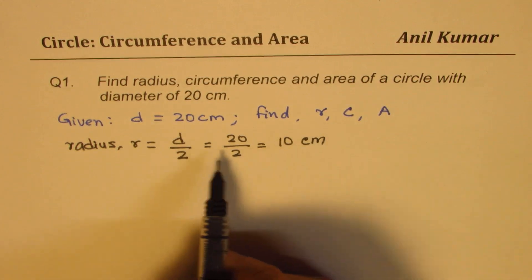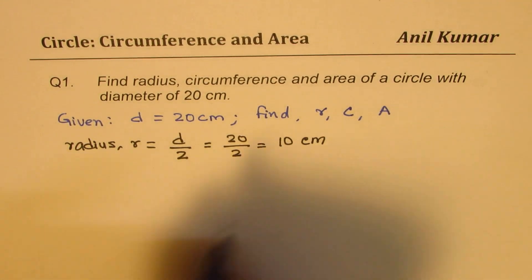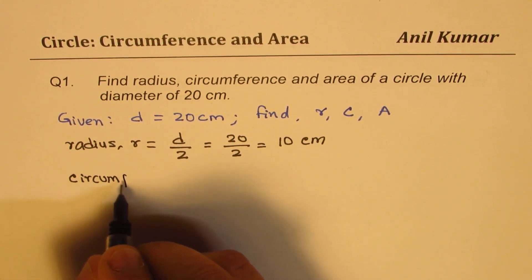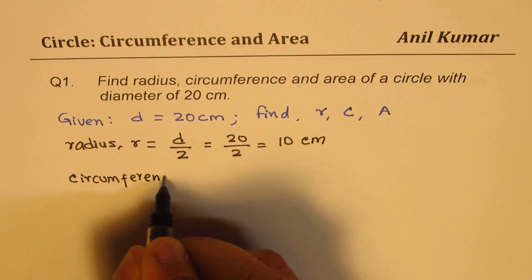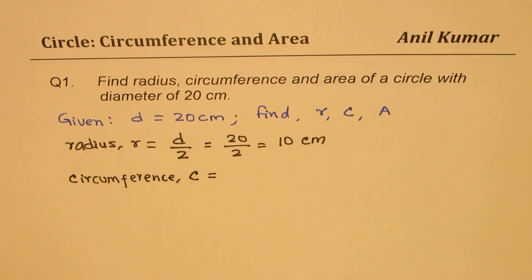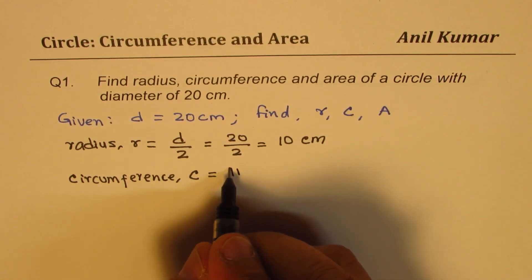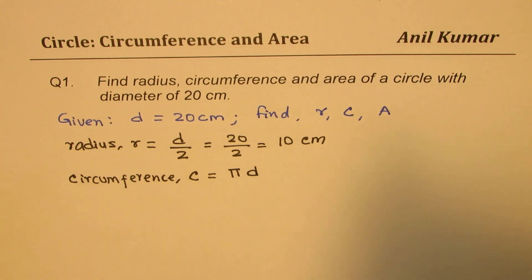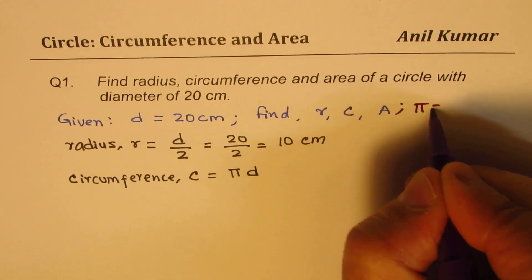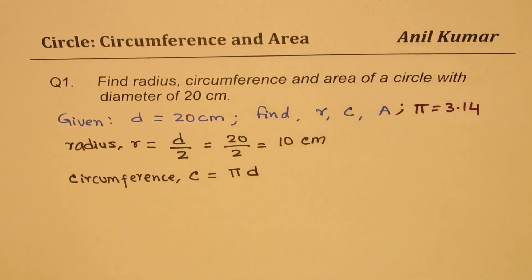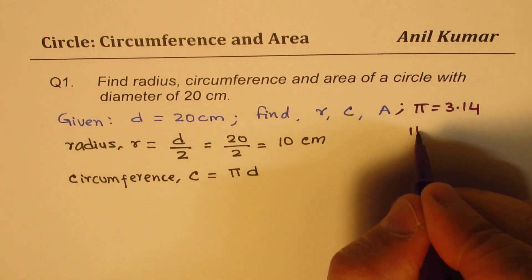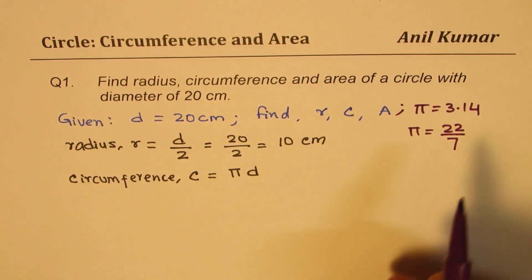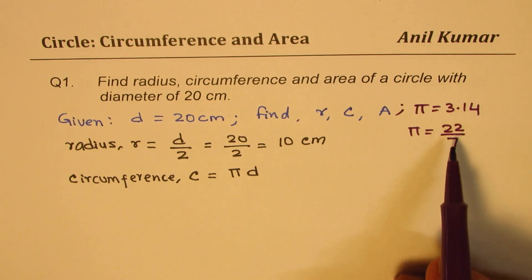Now, once you know the radius, you can find the area and also the circumference. So, let's find circumference C. Circumference can be written as π times diameter d. The value of π should be taken as 3.14 for our calculations. Some of you can also take π as 22 over 7.